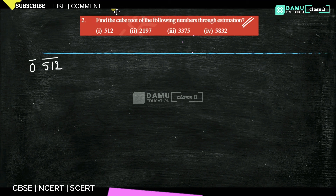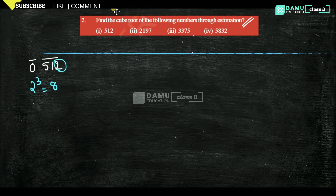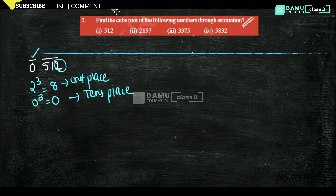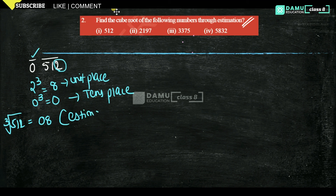For 512, the unit digit is 2. We take 2 cubed = 8, so 8 will be the units digit of the cube root. The next group gives 0, since only '5' remains and 1³ = 1 is below 5, 2³ = 8 is above 5 — the least value is 0. So the estimated cube root of 512 is 08, that is 8.